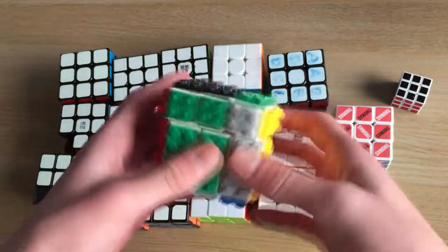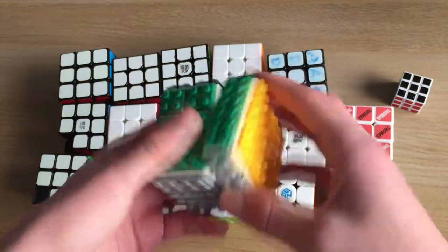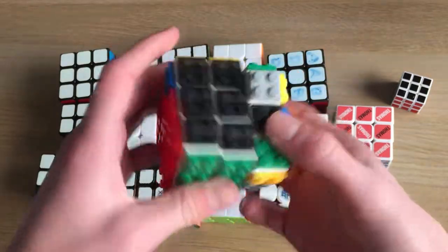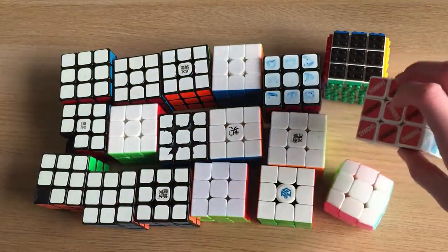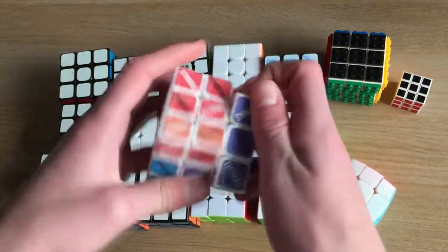Here we have a Lego 3x3 I built. Turns pretty smoothly, but doesn't corner cut very well. It's kind of weird to use, it hurts your hands after a while. Interesting cube. Then we've got a picture cube with my name on, which is also very smooth.